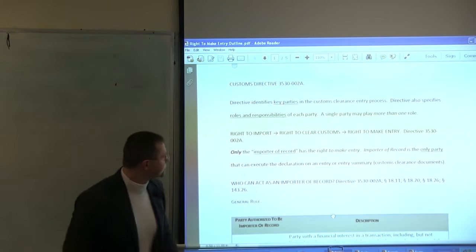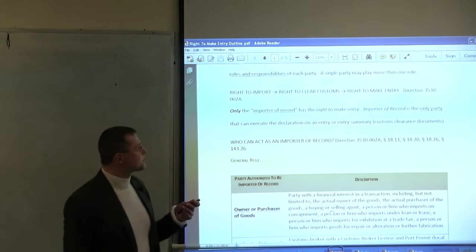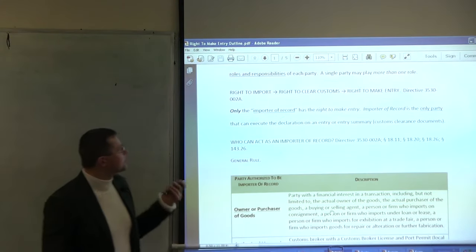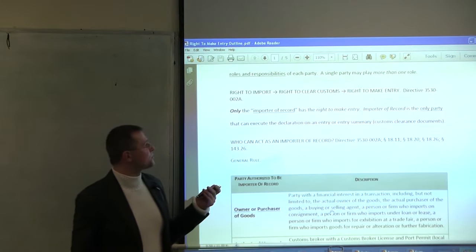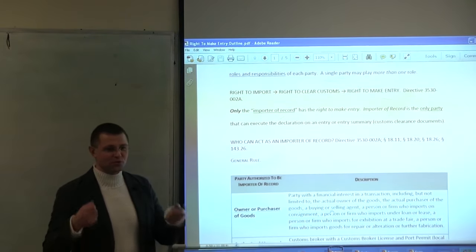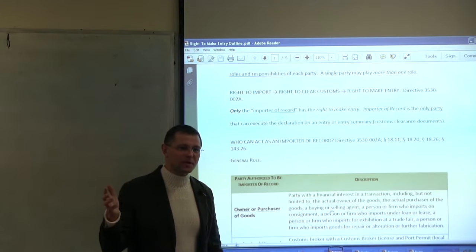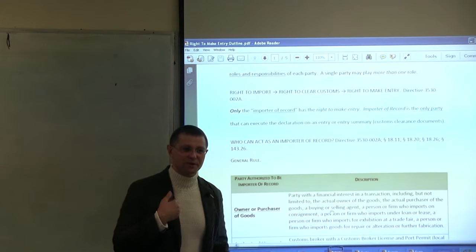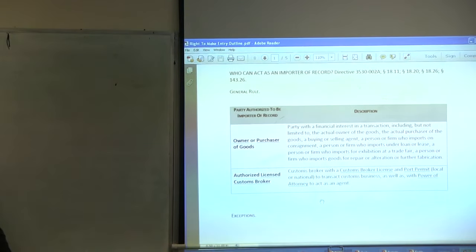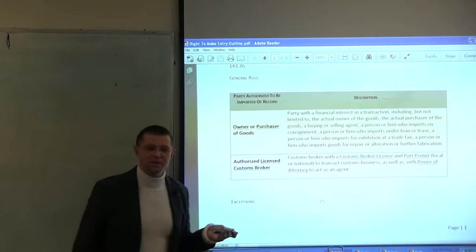Let's take a look at this notion of making the entry. First of all, notice the meaning of making an entry is tantamount to clearing the goods. So right to import equals right to clear. The right to clear customs means right to make entry. So if customs says no, you say 'I have a right to make entry and here is why.' You pull out that directive and show them you belong to one of those two categories: you're either the owner or purchaser of goods, or you're an authorized licensed customs broker.